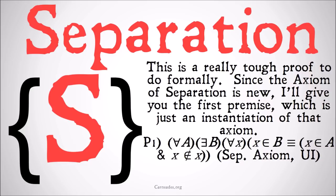For all x — that's for all sets or for all classes in this case, because we haven't shown there's a difference between classes and sets yet. x is a member of b is materially equivalent to x is a member of a and x is not a member of itself. In the past we had a little Greek letter and then something complicated after it, but in this case we have an instantiation of a formula — x is a member of a and x is not a member of itself. That's just a formula; it's a series of variables and operations.